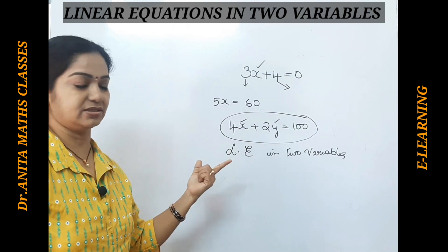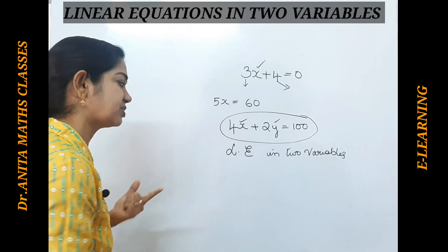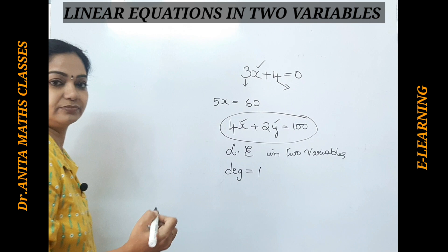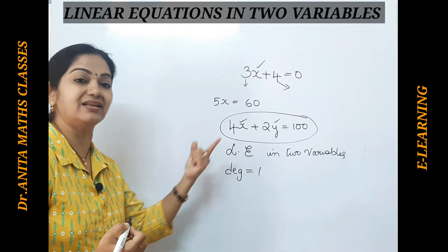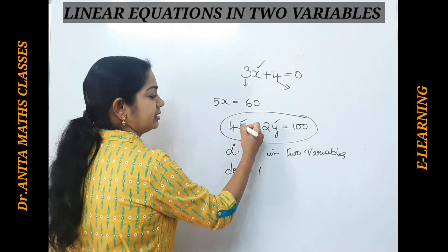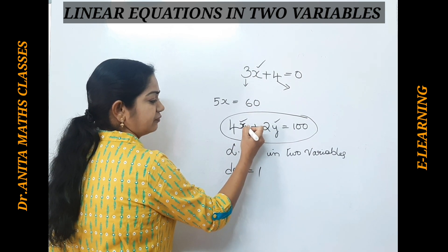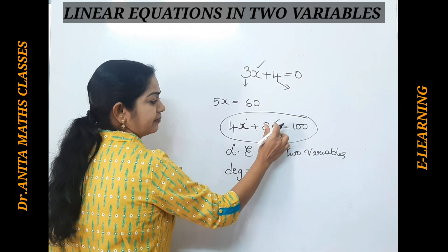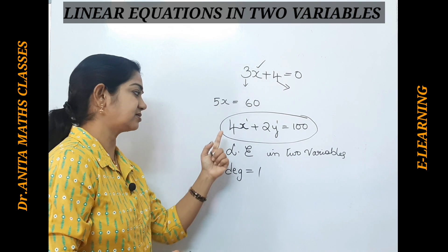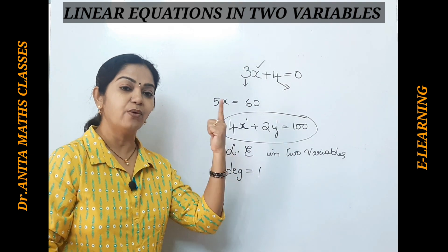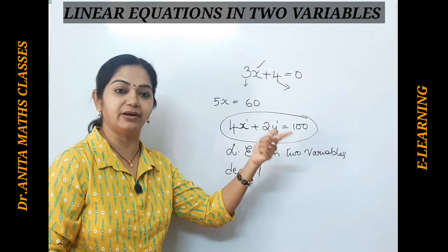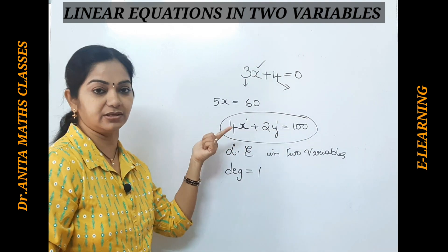Why is it called a linear equation? As we learned in previous sessions, if the degree of a polynomial is one, it is called a linear polynomial or a linear equation. The degree is the highest power of the exponent of the variable. Here, the exponent of x is one and the exponent of y is one, so the highest power is one — degree one. It is called linear. When the degree is two, it is called a quadratic equation, and so on.